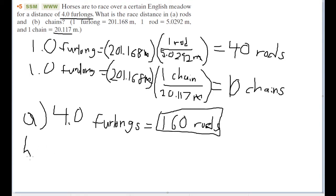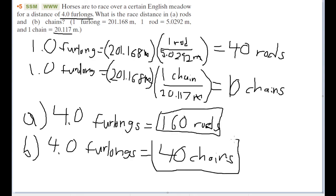And for part B, 4.0 furlongs is going to be equal to 10 chains times 4, which is going to be, lo and behold, 40 chains. And that is our conversion for both questions.